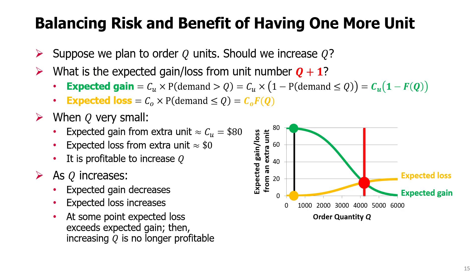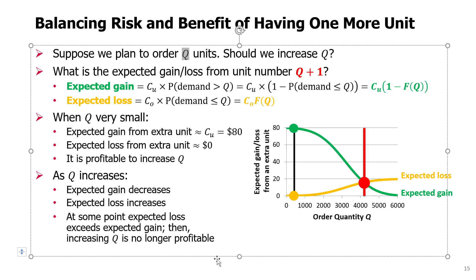To understand how we determine the quantity that maximizes expected profit or minimizes mismatch cost, we consider the following logic — an explanation of the optimal quantity formula. Suppose we plan to have Q units. The question is: should we increase Q to Q plus 1? What we need to consider is whether unit Q+1 is worth having on top of the quantity Q we already assumed.